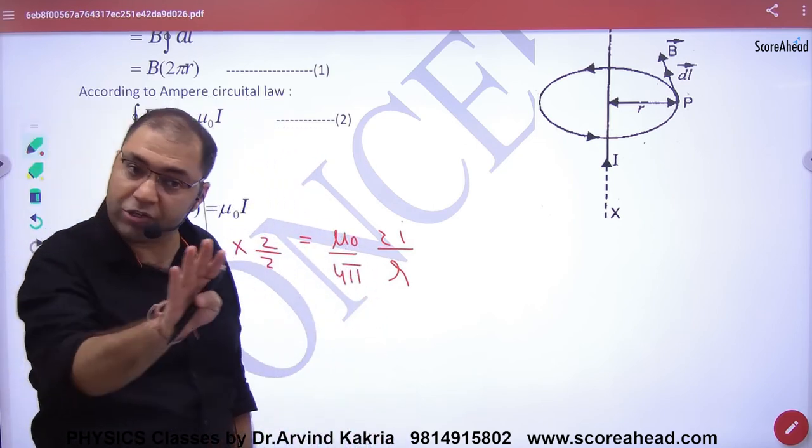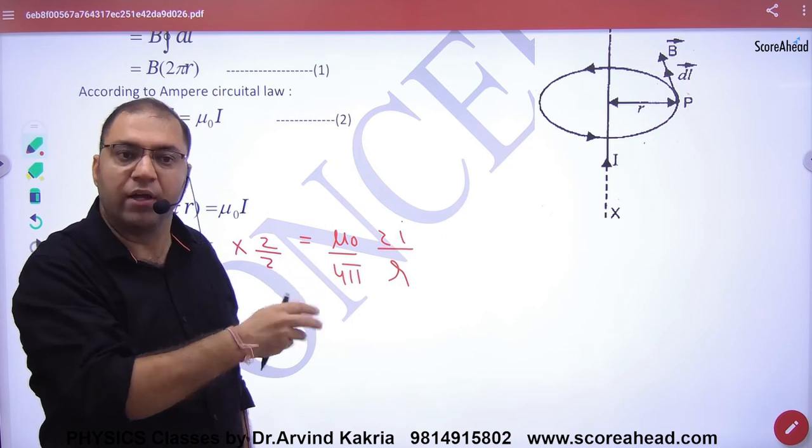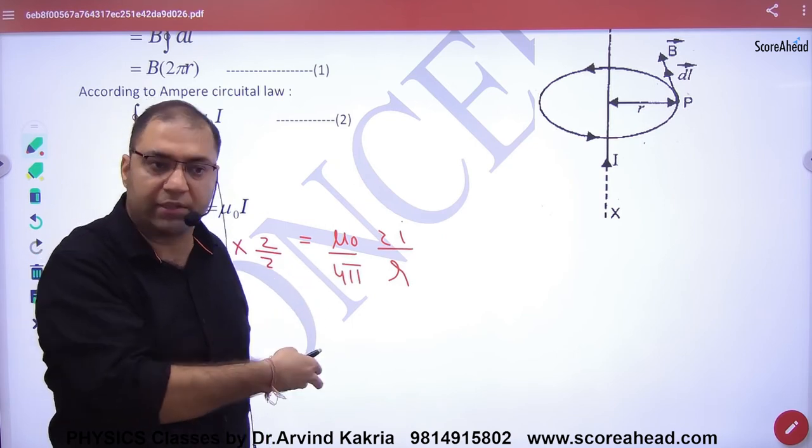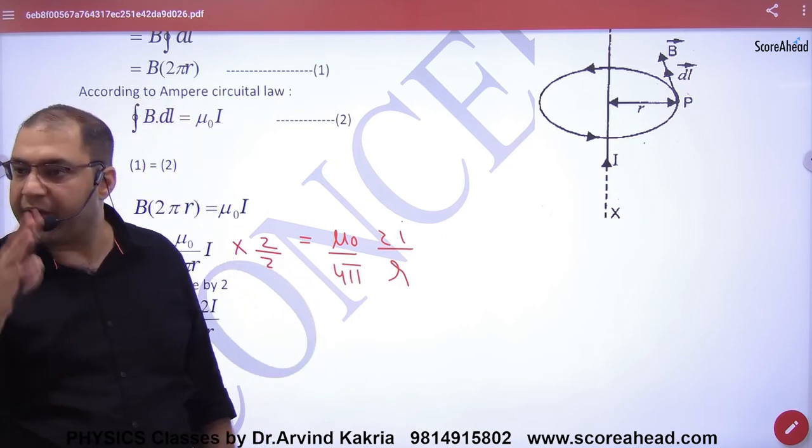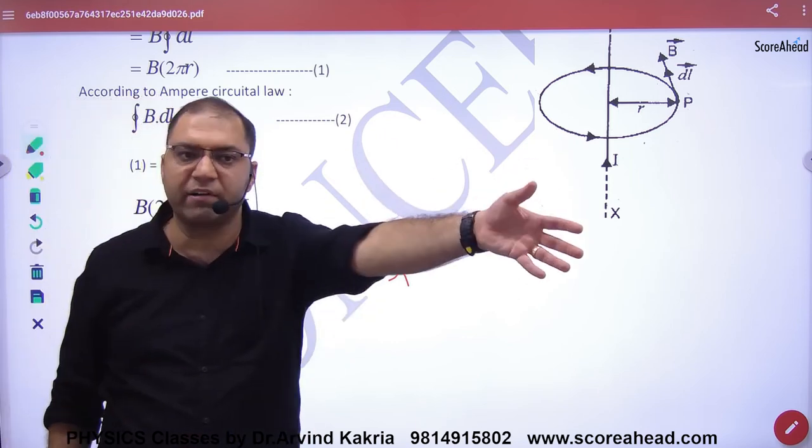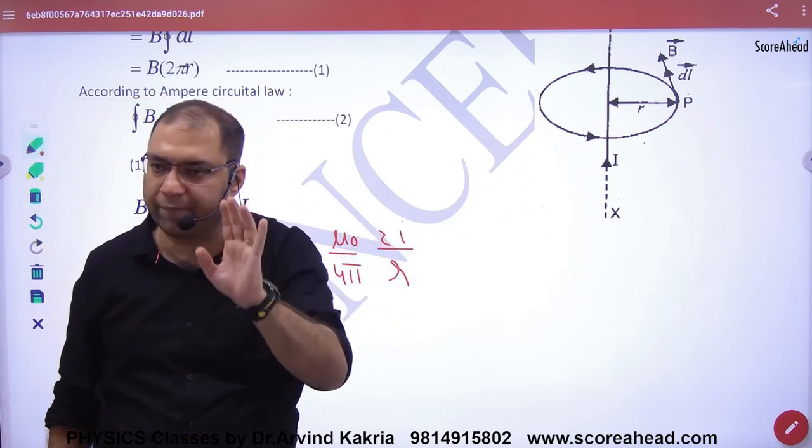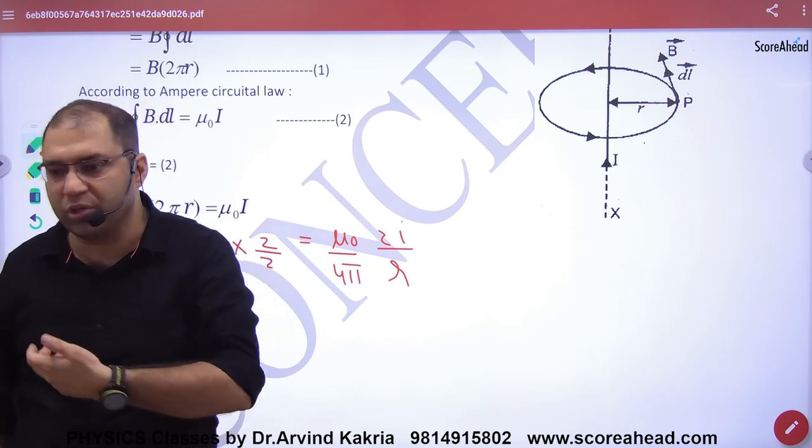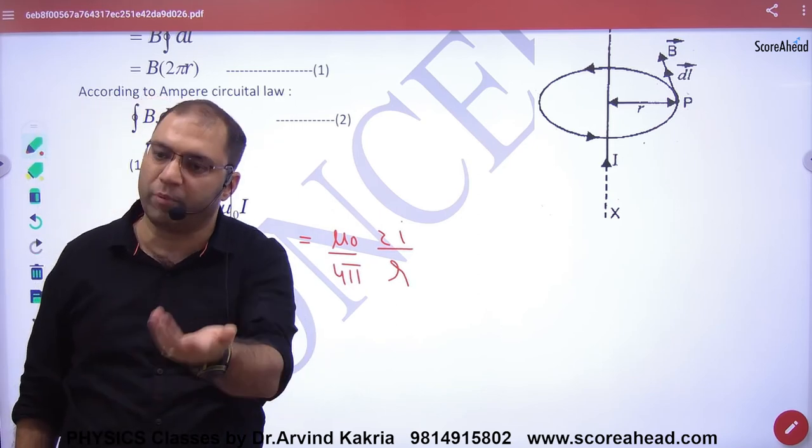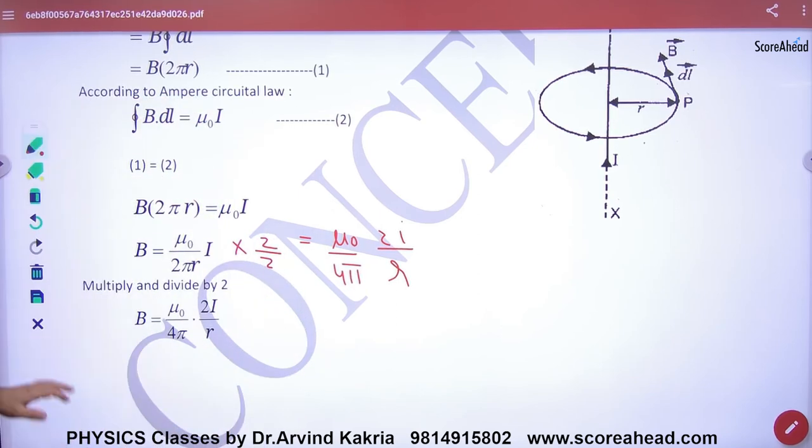One more application - solenoid also comes in this. When you have to find B for infinite wire, you can use Biot-Savart's law or Ampere's Circuital Law. If you have to mention 'by using ACL', then you have to do this. If not mentioned, then either is fine. Clear?